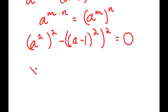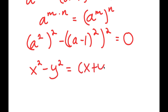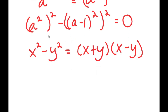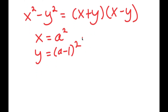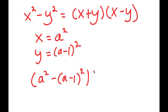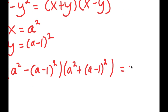Now, if I have something in the form x squared minus y squared, this is equal to x plus y times x minus y. In this case, I can think of x as a squared and y as a minus 1 squared. So by using this property, I get a squared minus a minus 1 squared times a squared plus a minus 1 squared, and this is all equal to 0.